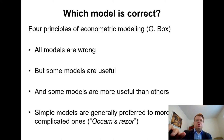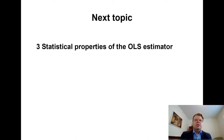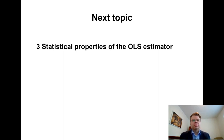That's all for now. I will next move to the third theme of the course, which considers statistical properties. After that, we proceed to statistical inference. As the next theme, we want to look at the performance of alternative estimators, starting from the classic OLS estimator and introducing its properties. Thanks.